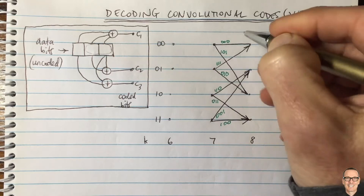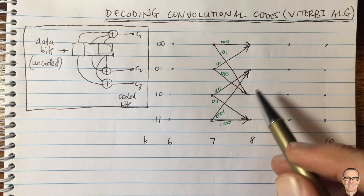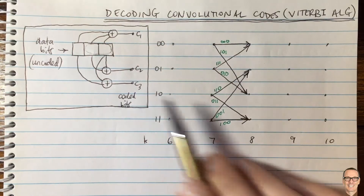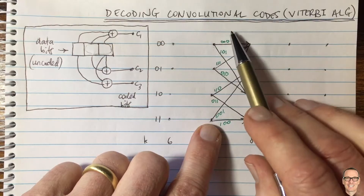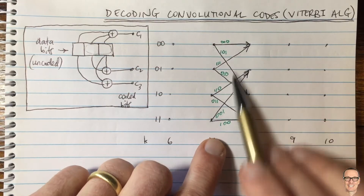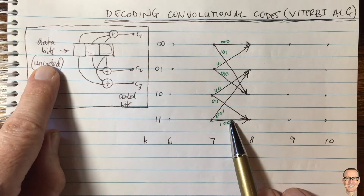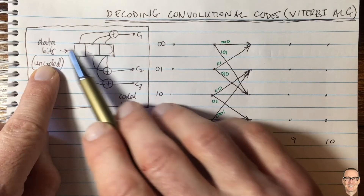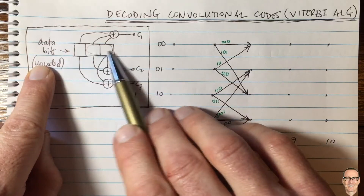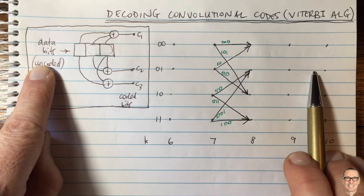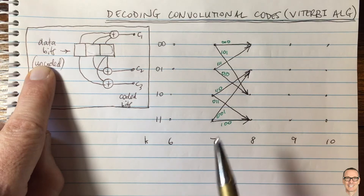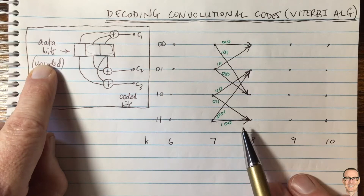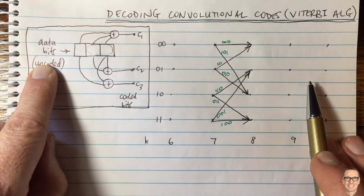So how does the Viterbi algorithm work? It knows there's memory and structure in the coded bits, so it knows you can't just receive outputs at one time slot and decide on the data bit for that slot. Because there's memory here — it was a convolution — the input data bits get spread out over multiple time slots, so it's not optimal to use just one time slot of measurements. You need to use multiple time slots.